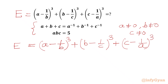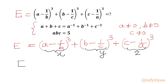Now I will use substitution. Let the first bracket (a minus 1/b) equal x, the second bracket (b minus 1/c) equal y, and the third bracket (c minus 1/a) equal z. So we are looking for the expression x³ plus y³ plus z³.